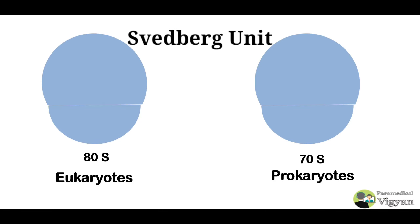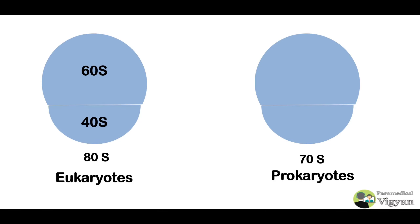This is a Svedberg unit. The eukaryote ribosome is 80S: large subunit is 60S and small subunit is 40S. The prokaryote ribosome is 70S: large subunit is 50S and small subunit is 30S. If you add 60S and 40S, you might expect 100, but it is 80. Similarly, 50 plus 30 gives 70, not 80.